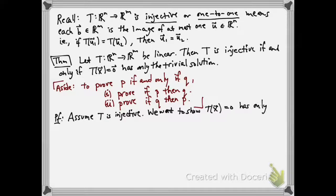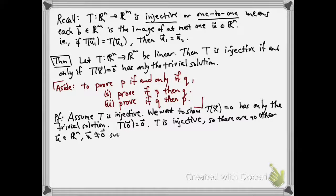First we're going to assume that T is injective. And we want to show that T of X equals zero has only the trivial solution. Well, T of the zero vector is zero because T is a linear transformation. And T is injective, which means there are no other vectors U other than the zero vector such that T of U equals zero.